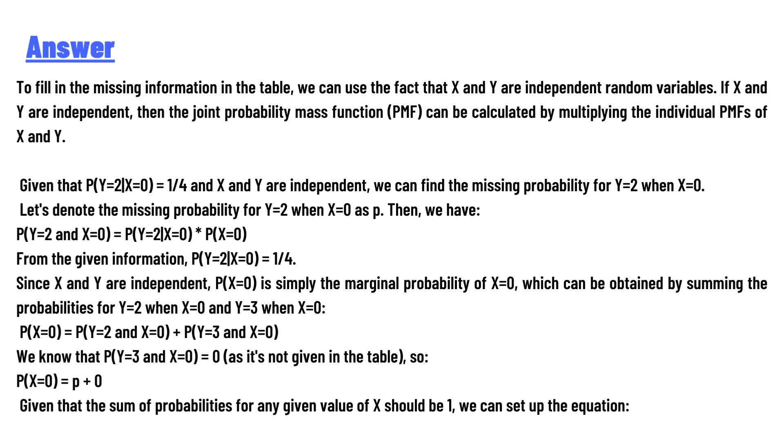Since X and Y are independent, P(X=0) is simply the marginal probability of X=0, which can be obtained by summing the probabilities for Y=2 and X=0, and Y=3 when X=0. So P(X=0) = P(Y=2 and X=0) + P(Y=3 and X=0).